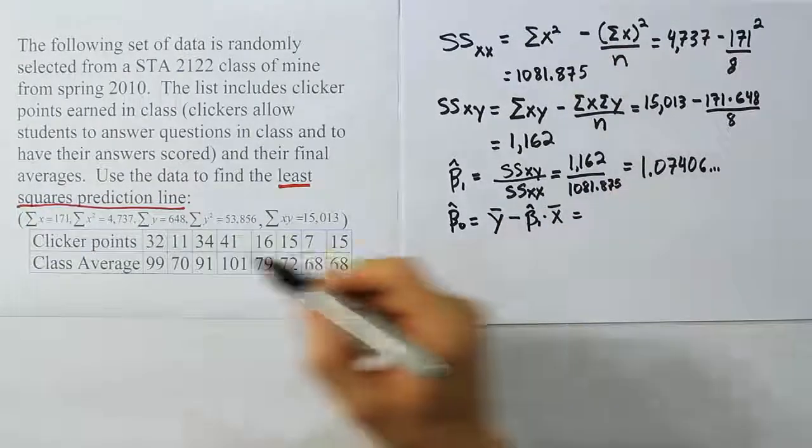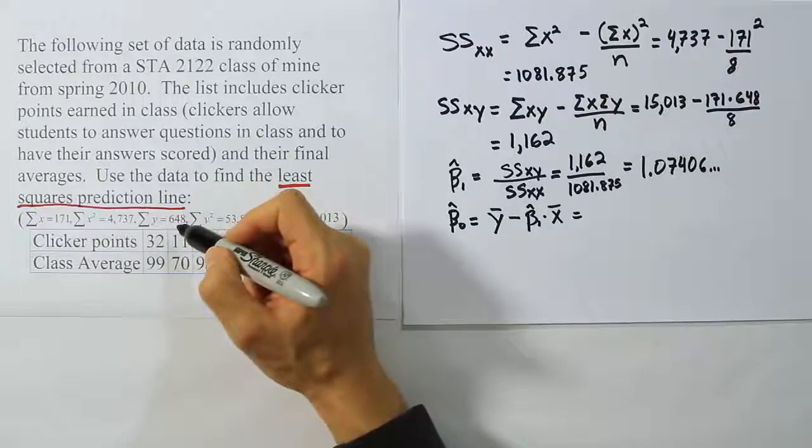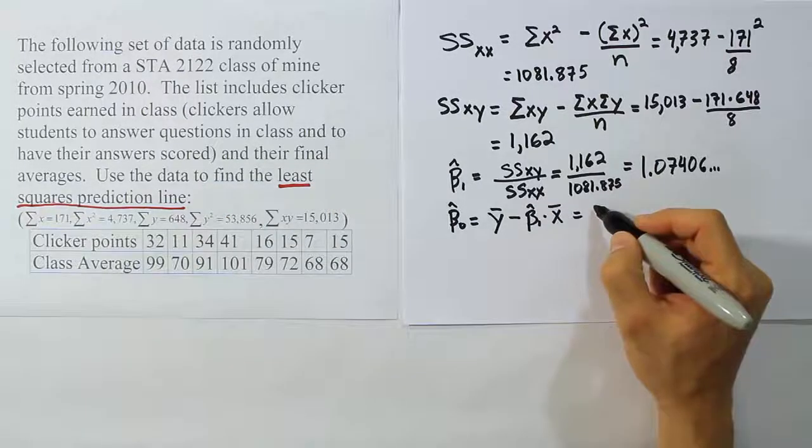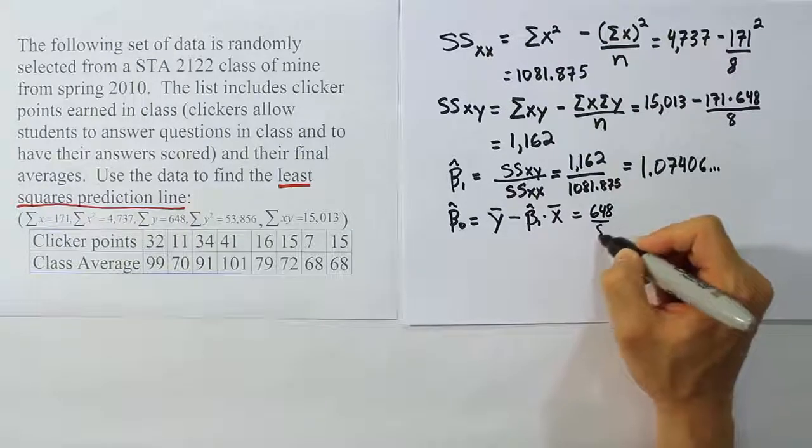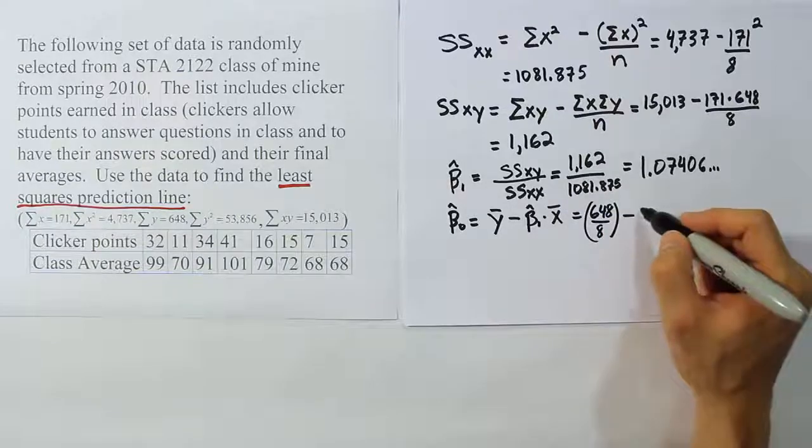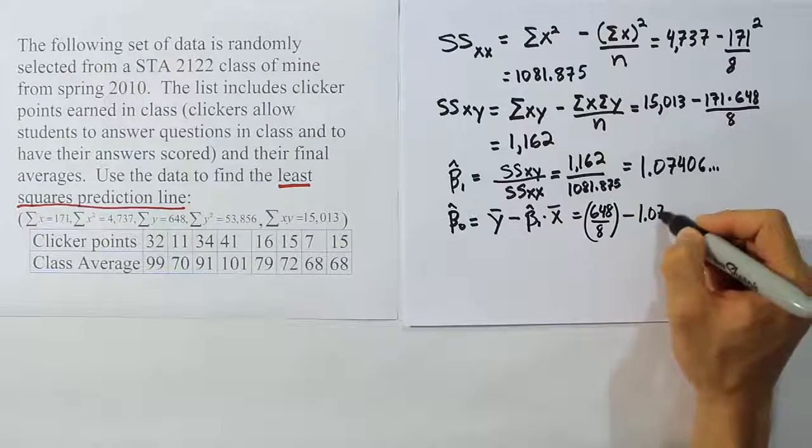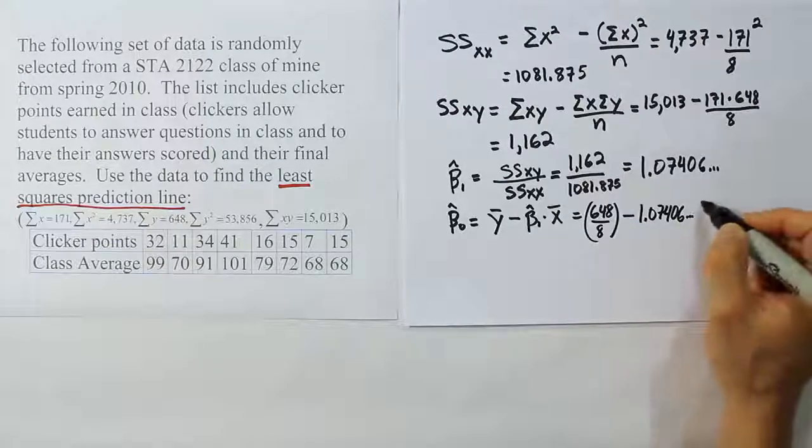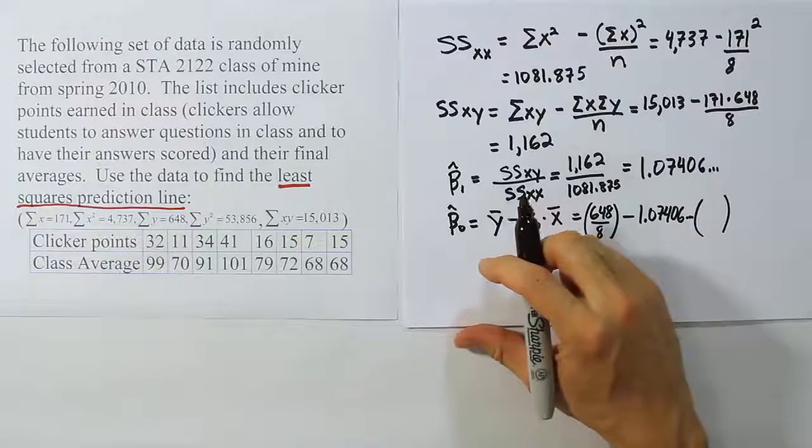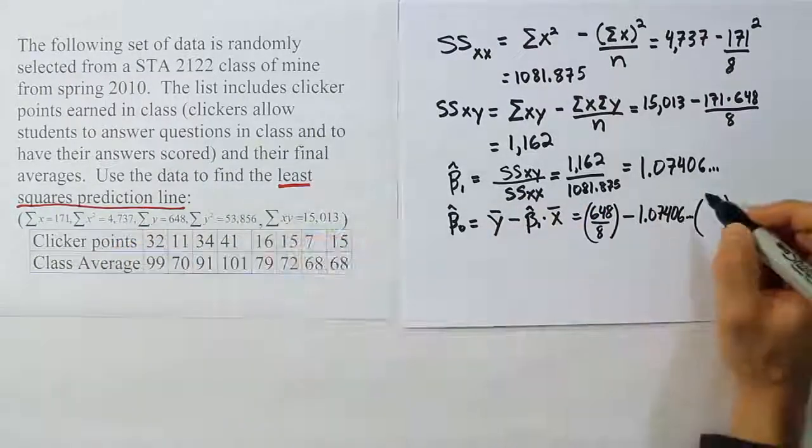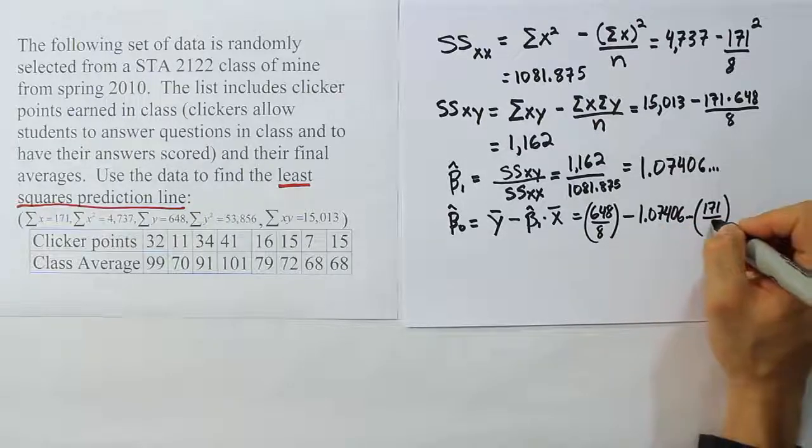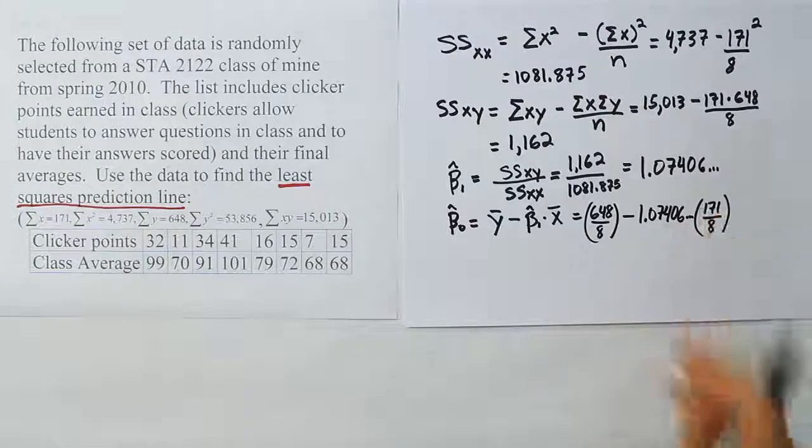Y bar is actually going to be 648, the sum of Y, divided by 8. So it's going to be 648 over 8. That's Y bar minus the beta 1. We found that to be 1.07406 and so on. We're going to do that here times the X bar. Now X bar is going to be the summation of X divided by N. The summation of X is 171 divided by N, the number of ordered pairs in the problem, which is 8. Let's work that out.